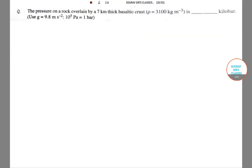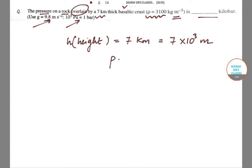Next question. The question says that the pressure on rock overlain by a 7 kilometers thick basaltic crust where rho value is given to be 3100, and we have to calculate in kilobar. We have been given the value of G. So we have H equals 7 kilometers which is 7 into 10 to the power 3 meters. Rho equals 3100 kg per meter cube. G equals 9.8 meter per second square.